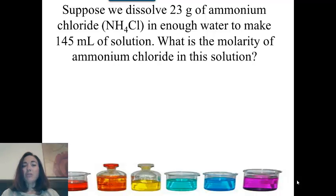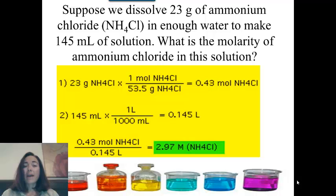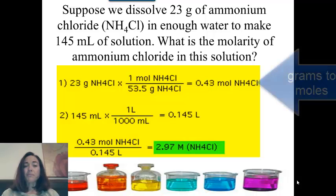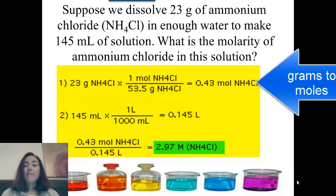I've got 23 grams of ammonium chloride, so the first thing I need to do is convert that to moles. The first step is to take that 23 grams and divide it by the molar mass of NH4Cl, which is 53.5 grams, and you get 0.43 moles.